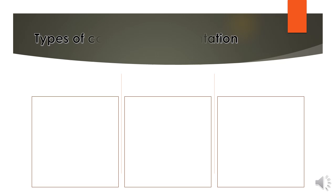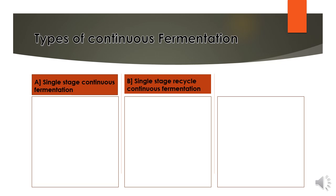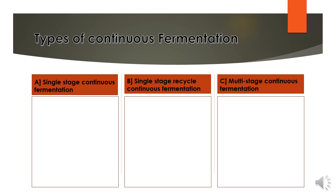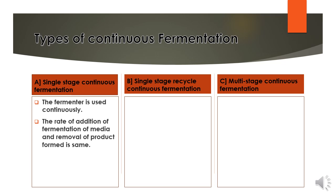There are three types of continuous fermentation procedures. The first is single stage continuous fermentation, where a single fermenter is used continuously. The rate of addition of fermentation media and removal of product is the same — this is the general continuous fermentation procedure.